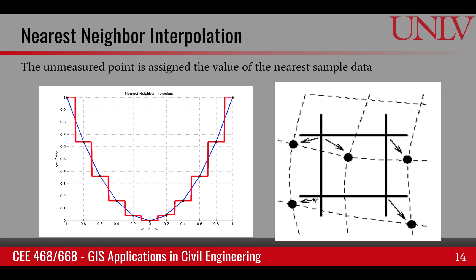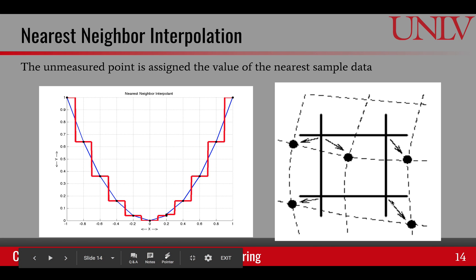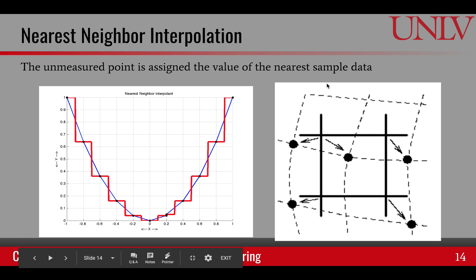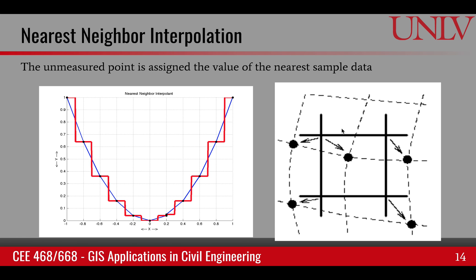For each intersection, the closest sample is identified and its value is assigned. We often have these irregularly spaced samples and we want to create a raster image. This is how nearest neighbor assignment or interpolation happens when we convert irregularly sampled data into a raster image.